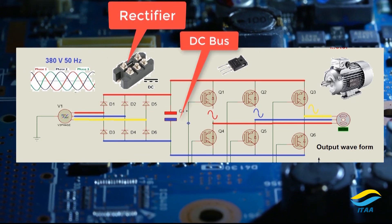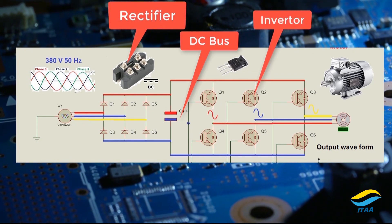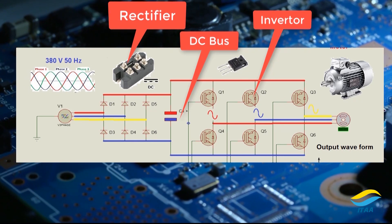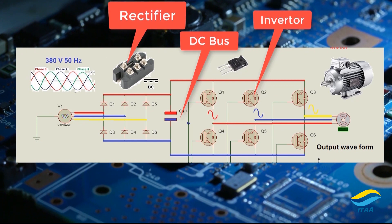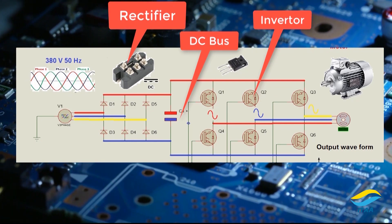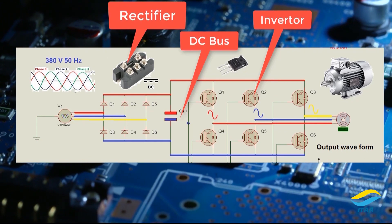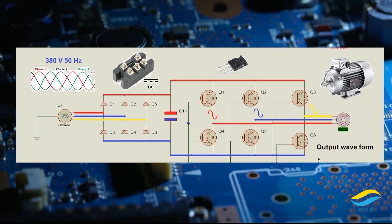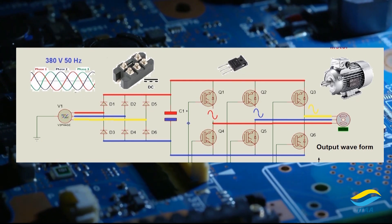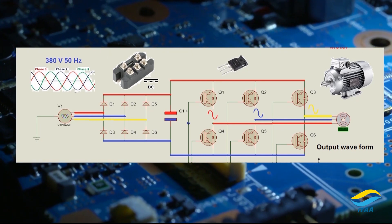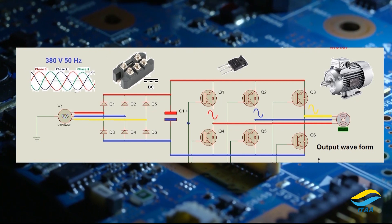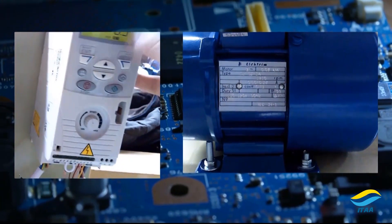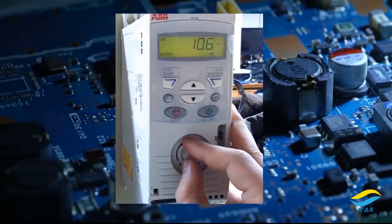In short, we have three elements: first is the rectifier, then the DC bus system, and then the inverter. In the rectification process, we have six diodes whose role is to convert the AC signal to DC. Since this DC signal is choppy, we use a capacitor in the DC bus to clean it. The clean signal is then passed through the inverter, where IGBTs or transistors convert it back to AC, ready for the motor to use.